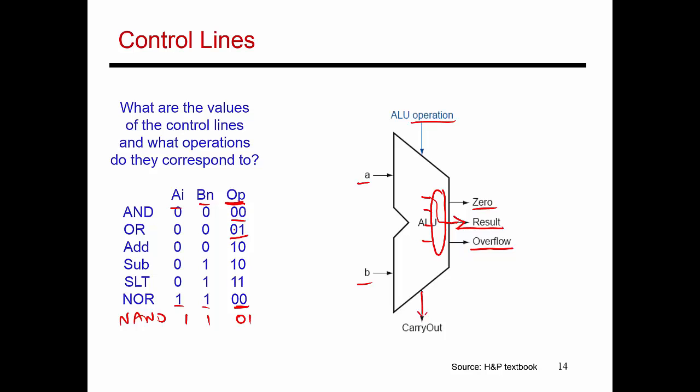Then if I want to do an addition, I'm going to set the opcode or the operation code to be 1, 0. A and B are fed in their raw forms.